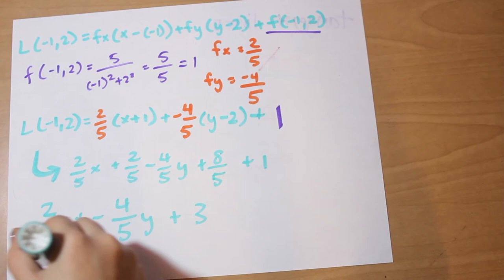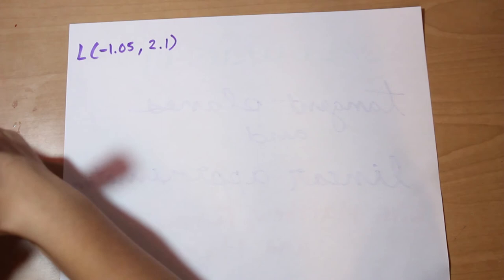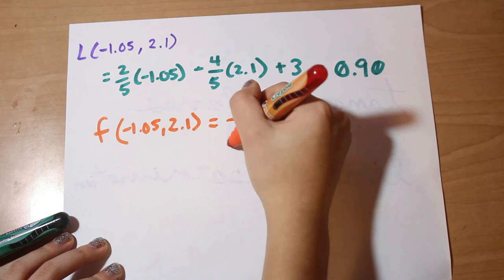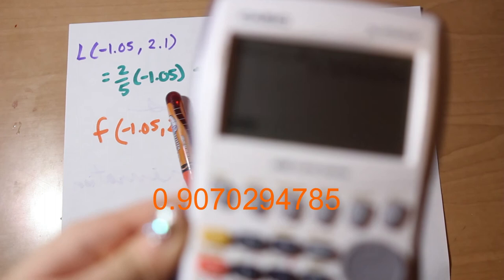So if you plug in the point (-1.05, 2.1) into the equation we got, you're going to find the answer 0.90. So if we find the actual value of the function using the original function and the point (-1.05, 2.1), we get this answer using our handy dandy calculator: 0.907029. It was pretty close.